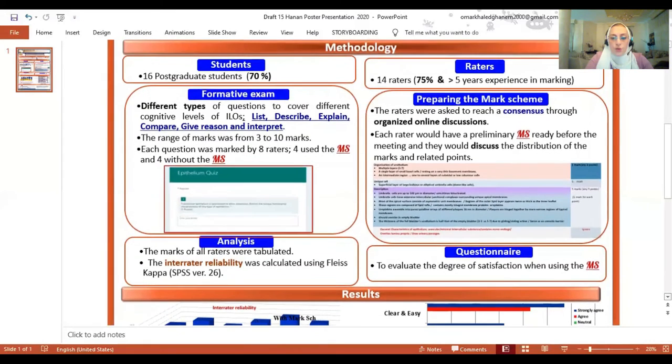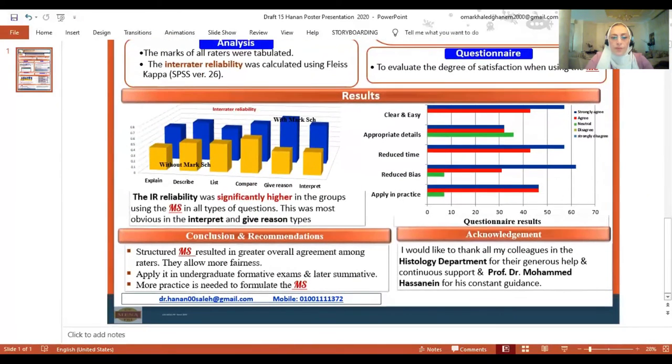What did the results show? The results showed that the inter-rater reliability was significantly higher in the groups using the mark scheme in all types of questions. As you can see here, the blue columns at the back are much higher than the yellow columns at the front. The blue ones were with the mark scheme and the yellow without the mark scheme, and you can see the difference between them.